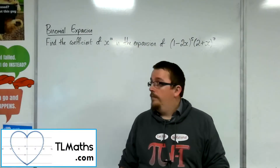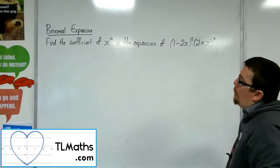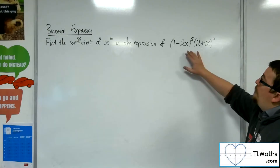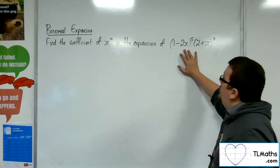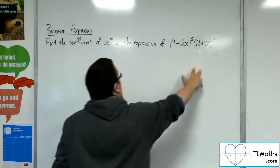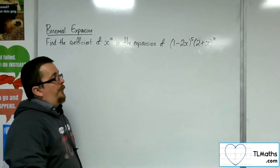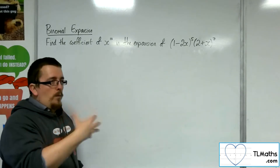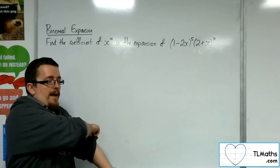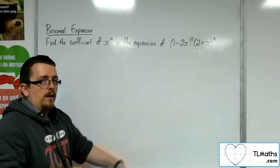In this problem, we want to find the coefficient of x to the 10 in the expansion of (1 minus 2x) to the 5 times (2 plus x) to the 7. What we want to do is think about how we can get an x to the 10 occurring.